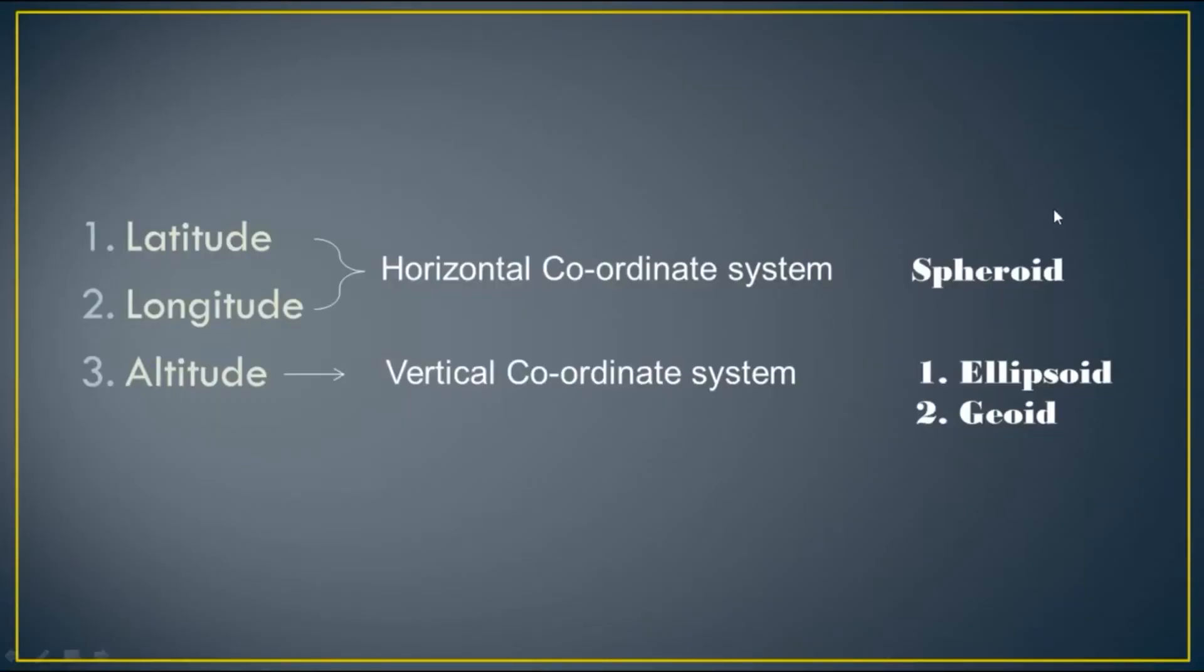To better understand the reference system, we have to think the earth is a spheroid. On the other hand, altitude is known as vertical coordinate system.